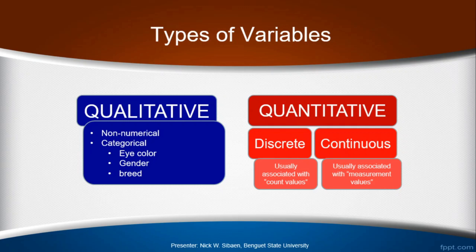Decimal values become meaningful for a continuous quantitative variable. These are variables that are measured. Length and weight are classic examples — values such as 2.54 inches or 3.78 kilograms make sense.